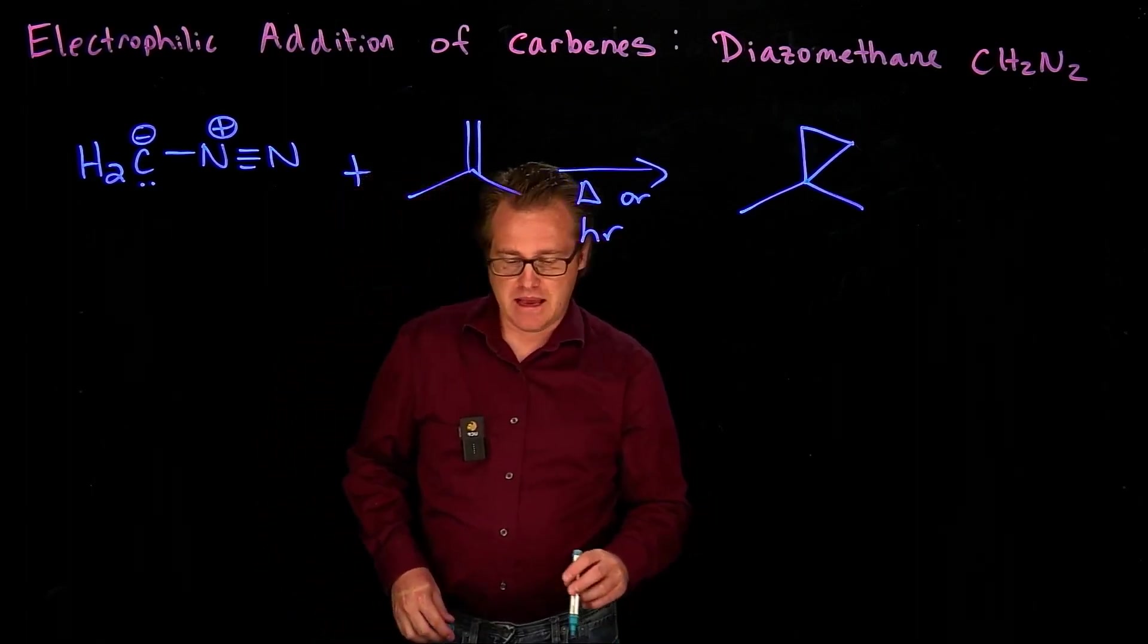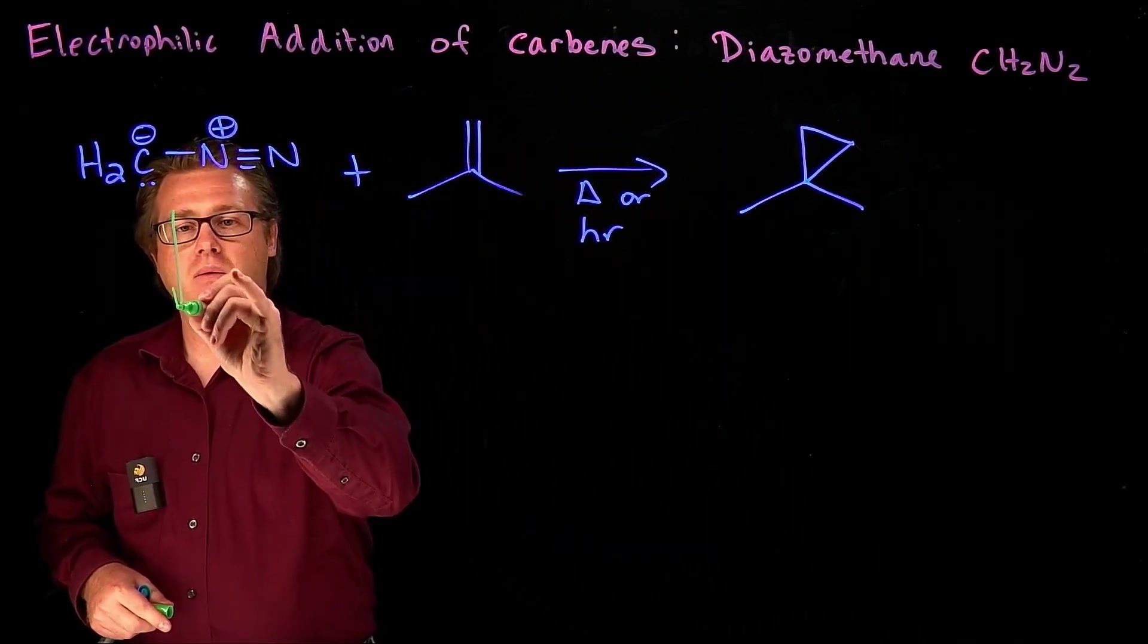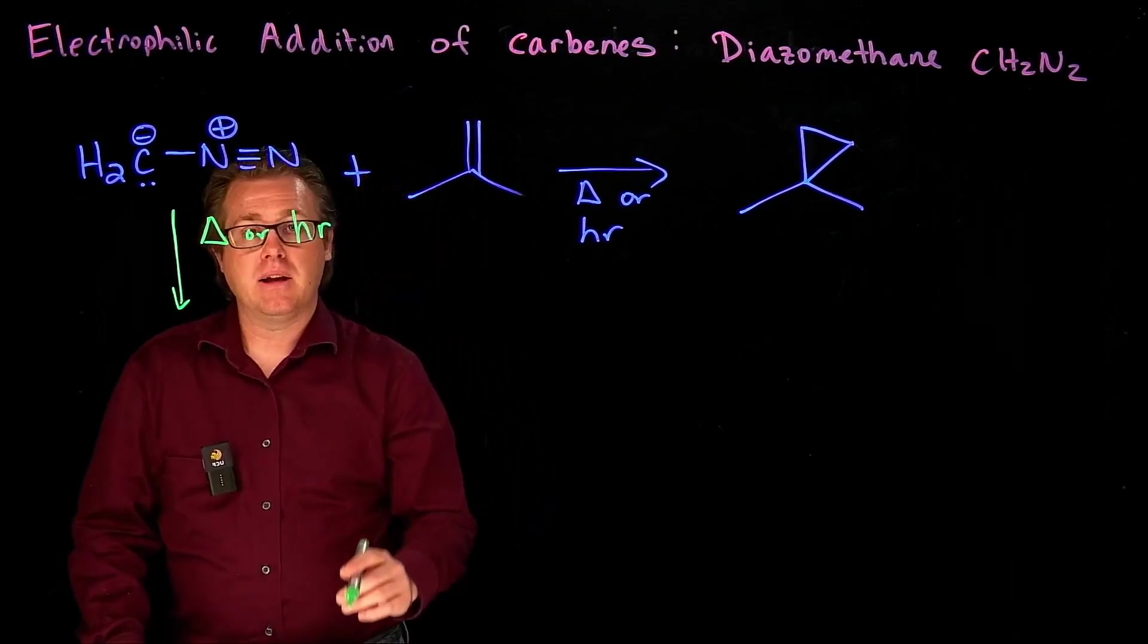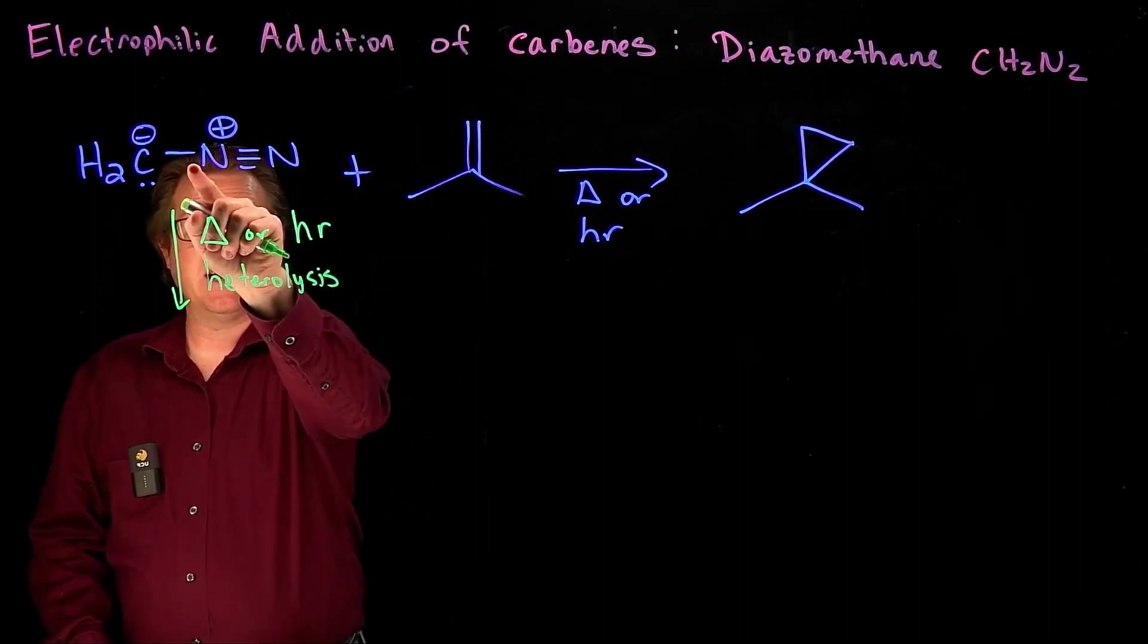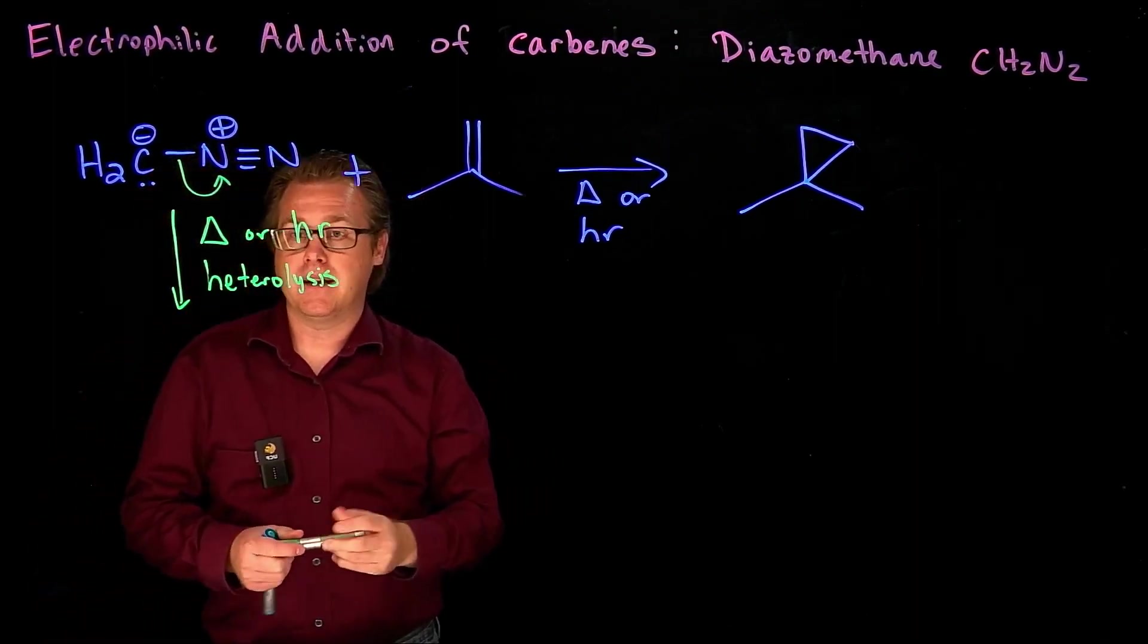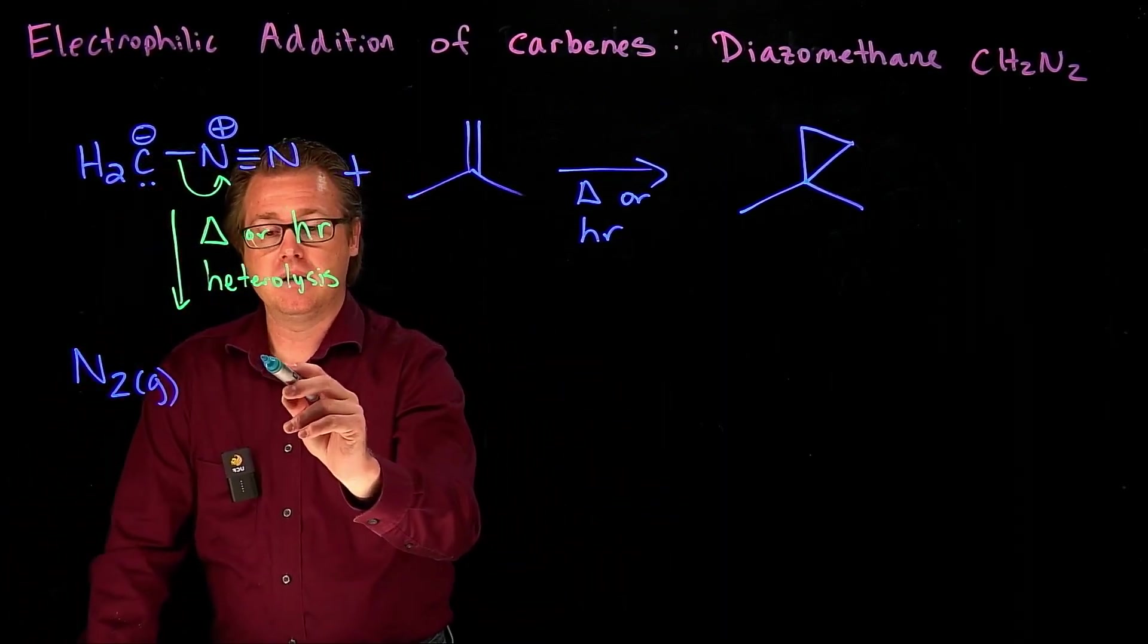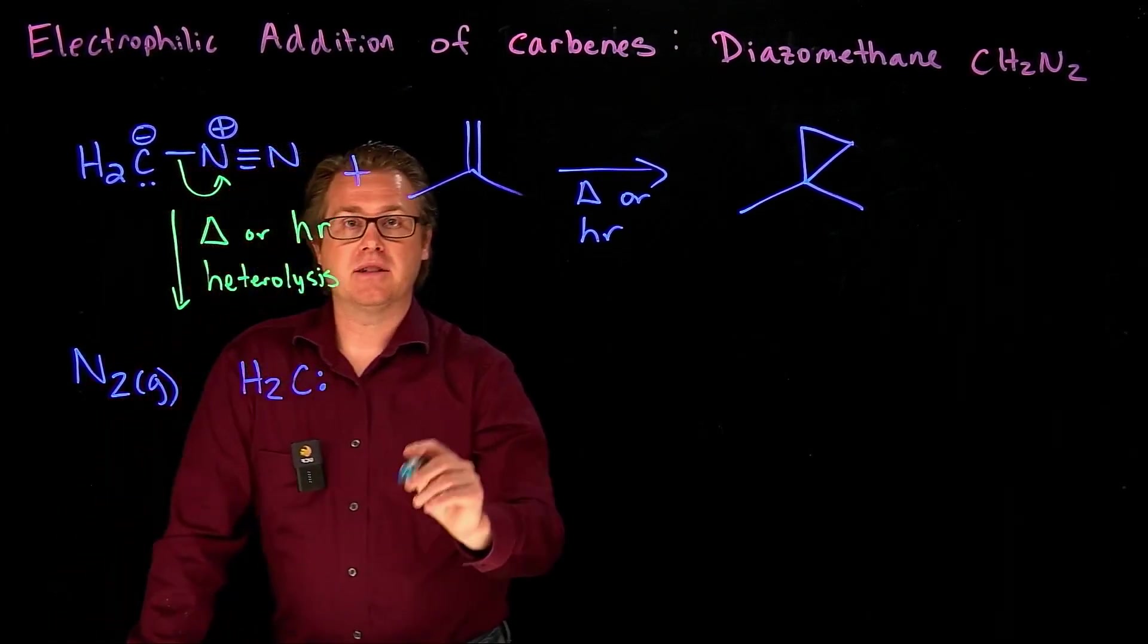And the mechanism at which this happens is as follows. When we add our heat or light, doesn't matter which, this carbon-nitrogen bond is very weak. And so we're going to have a heterolysis step in which this carbon-nitrogen bond is very weak, it's going to just break. And it's going to break homolytically, like so. And so what's that going to generate? That's going to generate nitrogen gas that's going to bubble away, that makes it very favorable. And then it makes this species right here. And that is our carbene.